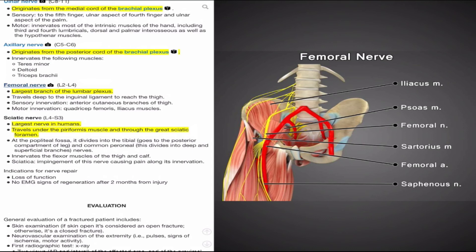Secondly, the sciatic nerve, the largest nerve in humans, will receive its contributions from L4 to S3 and travel under the piriformis muscle and through the great sciatic foramen as it runs along and supplies innervations to the posterior leg. At the popliteal fossa, the sciatic nerve will divide into the tibial nerve, running posteriorly, and common peroneal nerve, running anteriorly. The sciatic nerve innervates the flexor muscles of the thigh and the calf. A key clinical finding from impingement or damage to this nerve is sciatica, which will cause patients to have pain from their lower back along the posterior aspects of one or both legs.